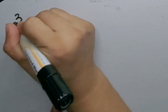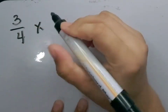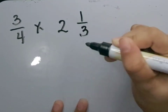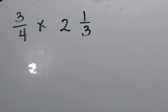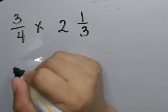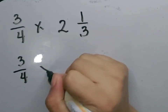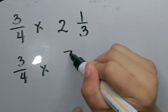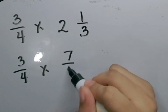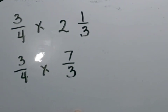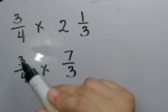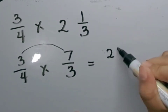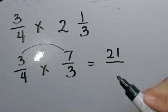Let's have another example. Let's multiply 3 fourths times 2 and 1 third. The first step is to change the mixed fraction to improper fraction. We have 3 fourths times — 3 times 2 is equal to 6, plus 1 is equal to 7. Then let's copy the denominator. Next, let's multiply the numerator by the numerator and the denominator by the denominator. 3 times 7 is equal to 21.